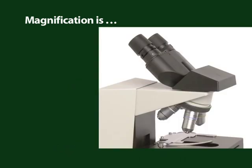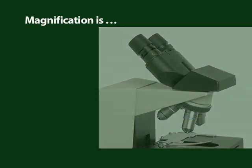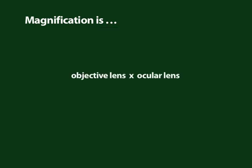Although it depends upon both the lenses and the distances between them, magnification is simply obtained by multiplying the magnification capability of the objective lens by the magnification capability of the ocular lens. For example, a 20 times objective lens multiplied by a 10 times ocular lens equals 200 times magnification.